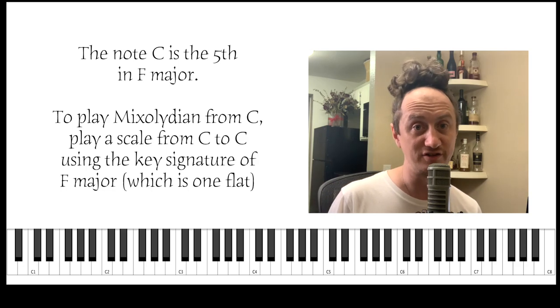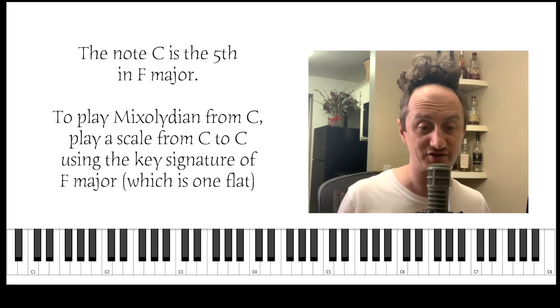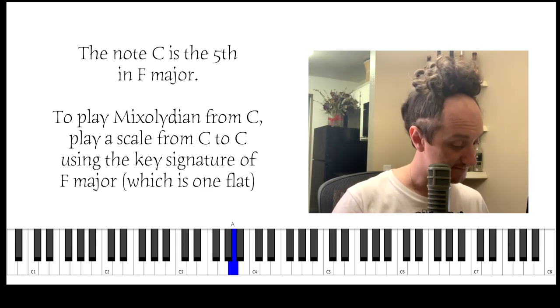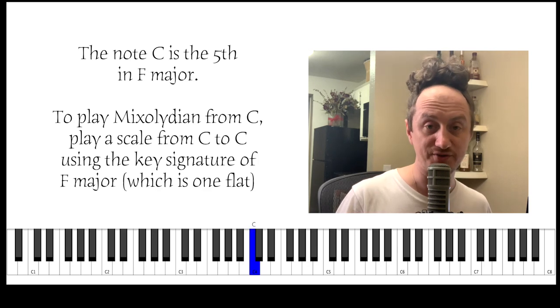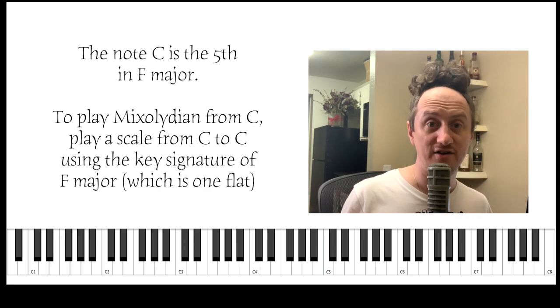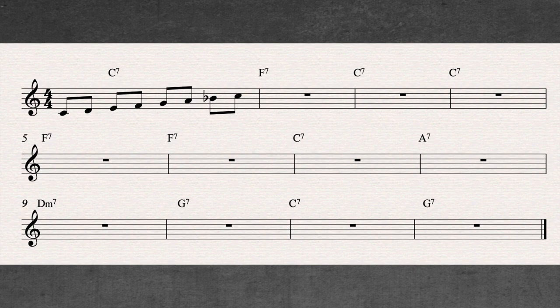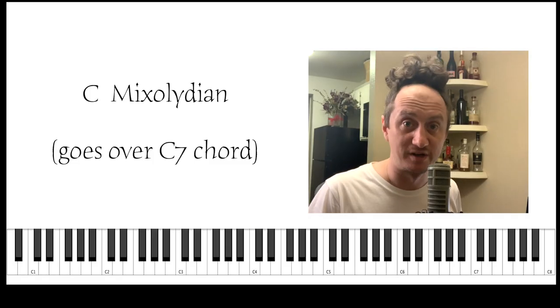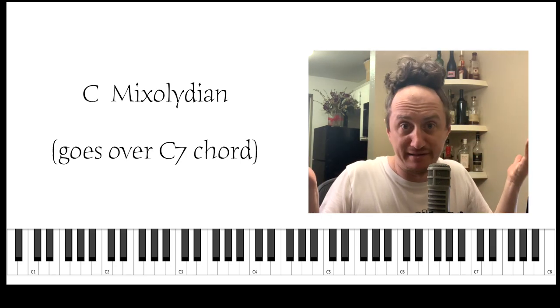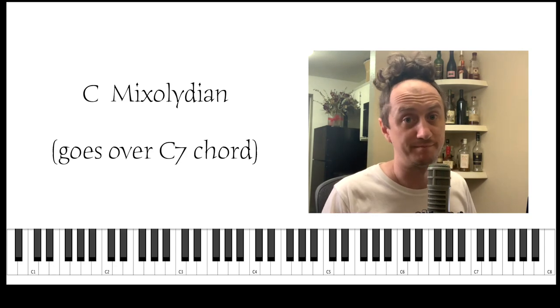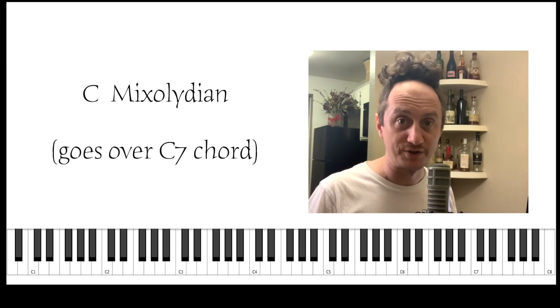So we need the key signature from F major, and then use that key signature when we play from C to C. So what is the key signature in F major? It's one flat, Bb. That means we have to play from C to C and use our Bb to make the C scale Mixolydian. And as I said before, C Mixolydian is what you use over a C dominant seven chord. A Mixolydian is what you use over an A dominant seven chord. Bb Mixolydian is what you use over a Bb dominant seven chord.